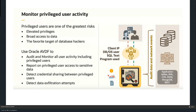I can also check for data exfiltration. Exfiltration means I can set a limit on the number of rows I consider normal. If somebody normally selects 100 rows from a table that's fine, but if I see selects accessing 100,000 or a million rows, I want to know why. I can put in alert policies to help detect when data exfiltration is happening, and I can be alerted when such an event occurs.